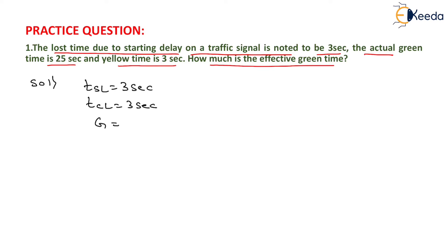Now we have the green time equal to 25 seconds which is given in the question, and amber time, that is yellow time, is given as 3 seconds. Now we want to determine the value of effective green time.